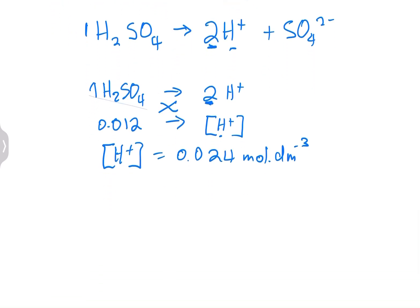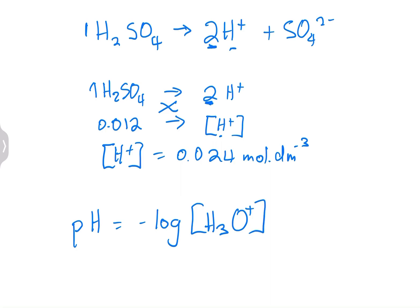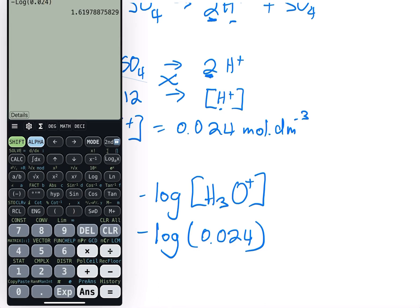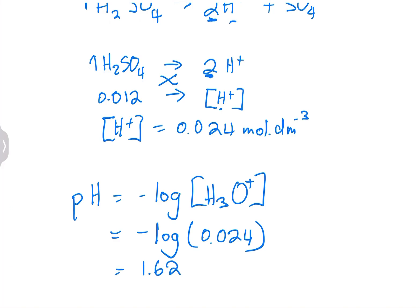Now we can calculate the pH. Remember, every time we calculate pH we need the concentration of hydronium ions. pH = −log[H₃O⁺] = −log(0.024) = 1.62. So the pH of the solution is 1.62. Please remember that pH does not have any units.